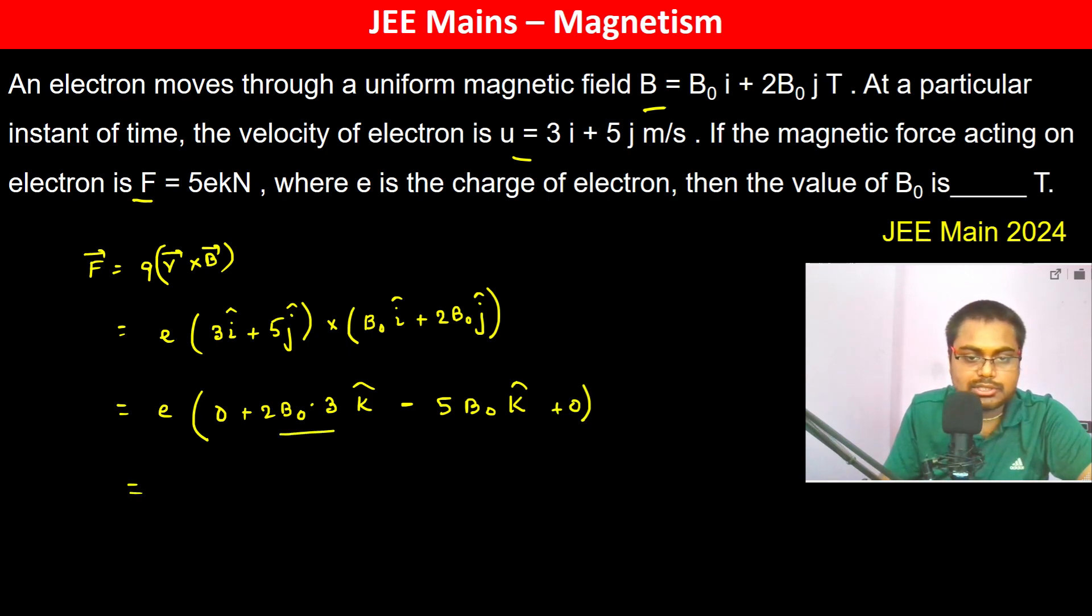ĵ × ĵ is zero, so this is 6B₀ minus 5B₀. Therefore, this is plus B₀k̂.